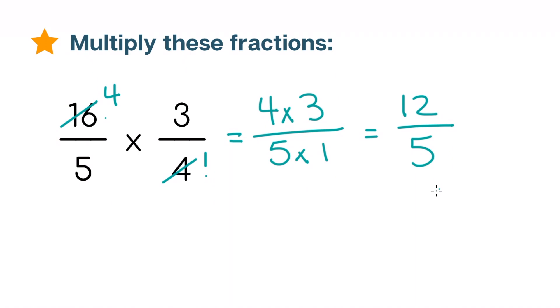And if you want or if your teacher wants, you can write this as a mixed number where 5 goes into 12 two times so that's our whole number. And 2 is left over. So our answer as a mixed number is 2 and 2 fifths.